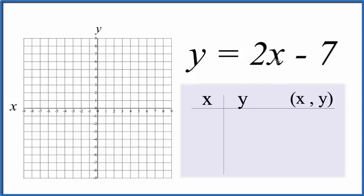I like to start out with 0 for x because 2 times 0, that's 0, so we just have y equals negative 7. How about we put something a little bigger in? If we put 3 in, 2 times 3 is 6, 6 minus 7 is negative 1.